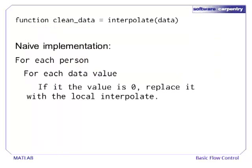A naive implementation of interpolation will loop through each person and data value. We will test whether the value is zero, and if it is, we replace it with a local interpolation. This approach is not a data parallel way of thinking about problems involving matrices. It requires that we loop through every value of the matrix. Still, it is informative to write the naive version to make sure we understand what the program is doing.